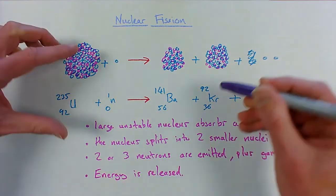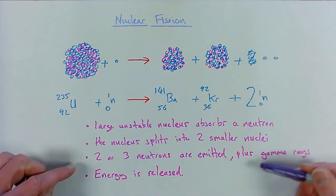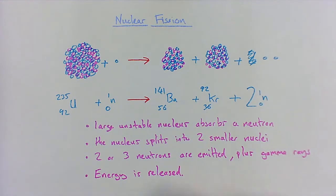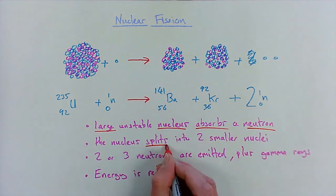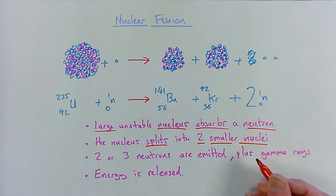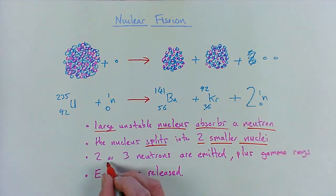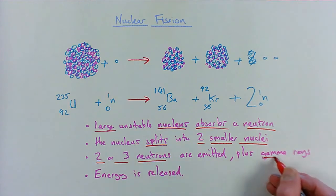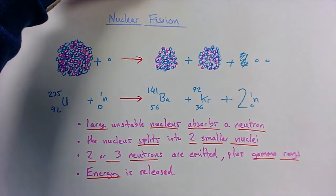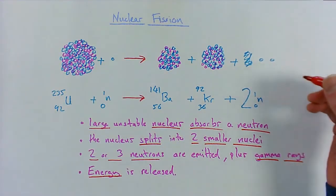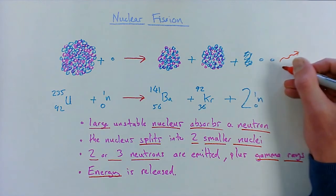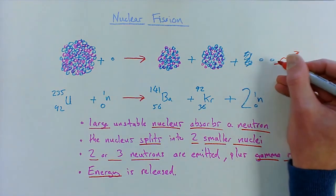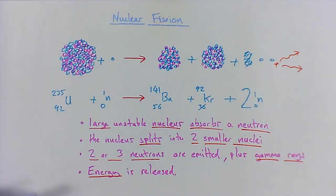If you're asked to describe fission, this is what's going on in these four lines here. If you can learn those lines and what's going on - this idea of a large nucleus absorbs a neutron, splits into two smaller nuclei - use the word nuclei, use the word nucleus, don't use the word atom - plus two or three neutrons, gamma rays and energy released, then you'll be getting all the marks on that kind of question. The only thing I've not drawn on my diagram here is the gamma rays, so maybe I can draw on some waves. Remember gamma rays are high energy electromagnetic waves. That's nuclear fission.